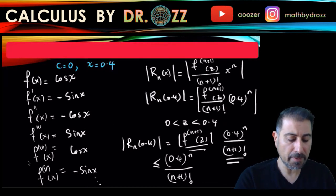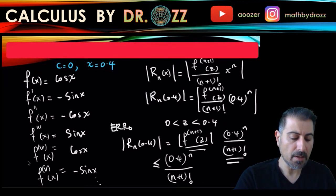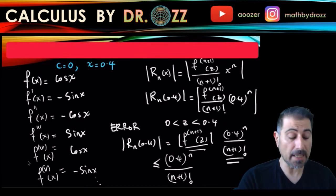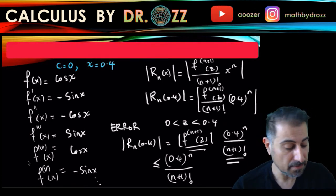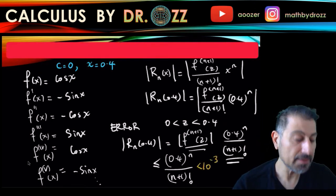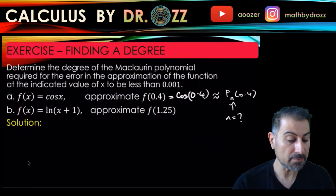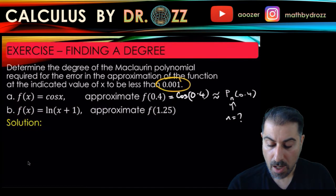So here we go. So what I want is, since this is the error, the amount of error, I want this error, well, this error is already less than or equal to 0.4 to the n divided by n plus 1 factorial, but I want this to be strictly less than 10 to the minus 3. That's what it says in the question statement. 10 to the minus 3.